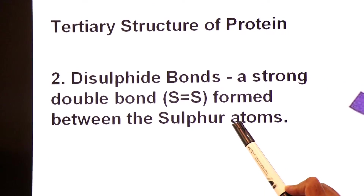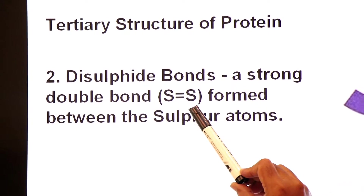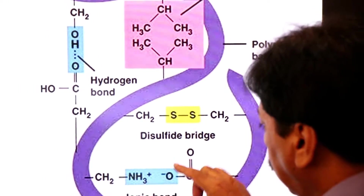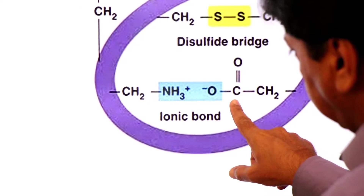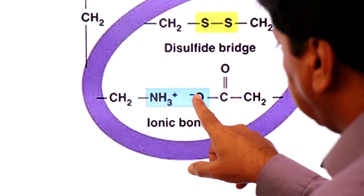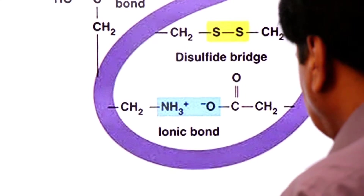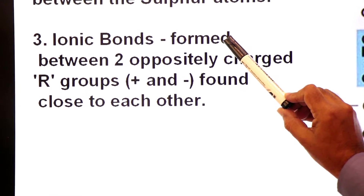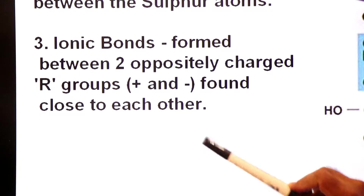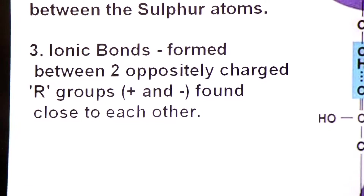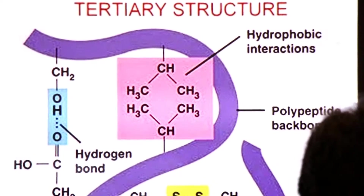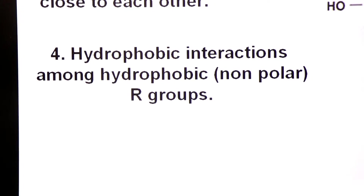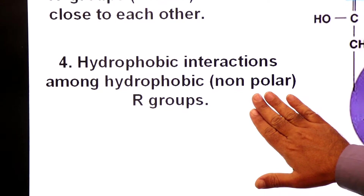The second bond stabilizing the tertiary structure is the disulfide bond, a strong double bond (S–S bond) formed between sulfur atoms. Third, ionic bonds are formed between R groups: one amino acid's R group has a positive charge and another's has a negative charge, forming ionic bonds. The fourth interaction is hydrophobic interactions among hydrophobic non-polar R groups — non-polar means having no charges.